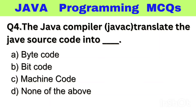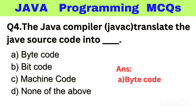Question number 4. The Java compiler translates the Java source code into dash. Option A: Bytecode, B: Bitcode, C: Machine Code, D: None of the above. The right answer is option A, Bytecode.